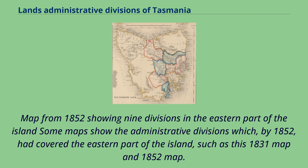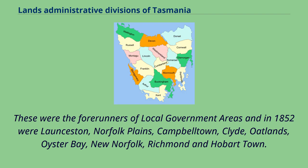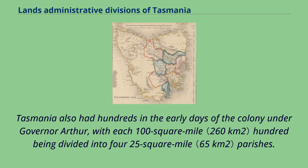A map from 1852 shows nine divisions in the eastern part of the island. Some maps show the administrative divisions which by 1852 had covered the eastern part of the island, such as this 1831 map and 1852 map. These were the forerunners of local government areas, and in 1852 were: Launceston, Norfolk Plains, Campbell Town, Clyde, Oatlands, Oyster Bay, New Norfolk, Richmond, and Hobart Town.